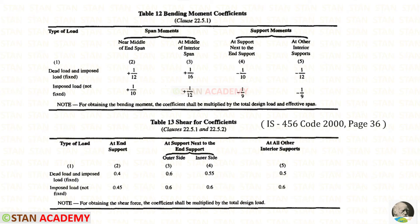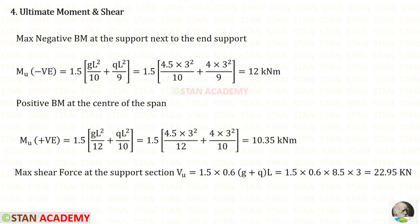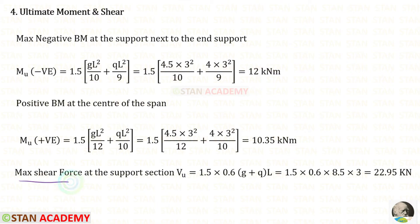Now we need to find the maximum shear force at the support section. Using the coefficient 0.6, we multiply by the sum of dead load and live load times L. Multiplying by 1.5 for the factored shear, the maximum factored shear force is 22.95 kilonewton.